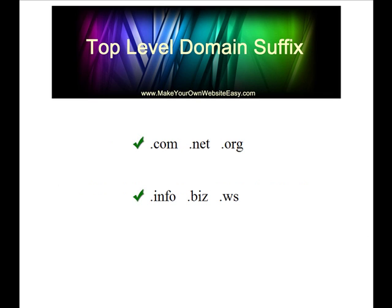The top-level domain suffix is a .com, .net, or .org. Also .info, .biz, and .ws are considered top-level domains, but for search engine optimization it's always best to start with a .com — unless you are an organization, in which case you would obviously do .org. If you can't get a .com, you can get a .net.